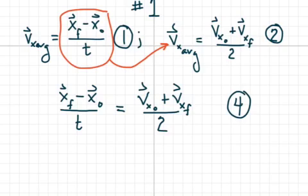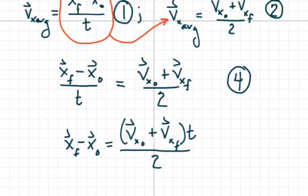We can rewrite this equation as xf minus x initial equals the sum of the velocities times time divided by 2. It's the same equation as number 4, we just took time onto the other side.